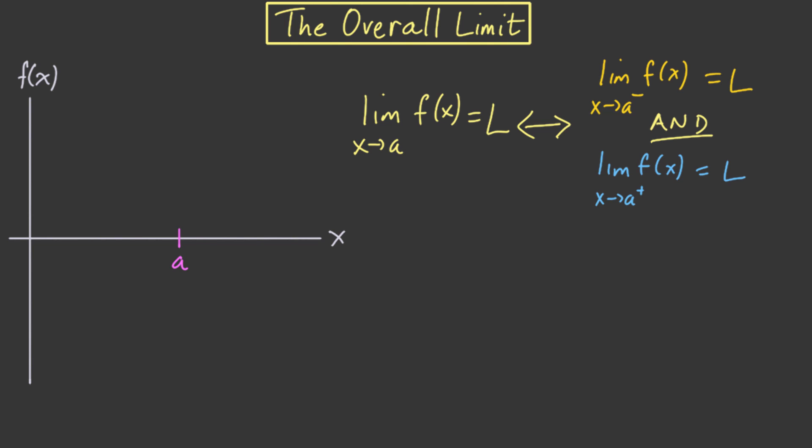In pictures it has to look like this. As we come in from the left, f(x) is approaching L, and as we come in from the right, same thing. And we can denote this either with this limit notation or we can use arrows. f(x) approaches L as x approaches a.